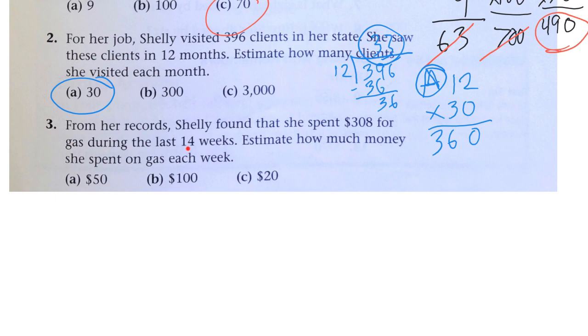So, 14 weeks. What if she spent $50? That would be about $700. So, she spent about $308. That's a lot more.